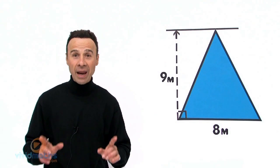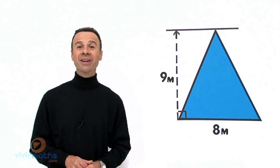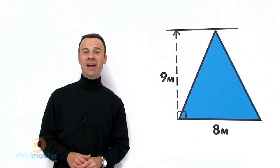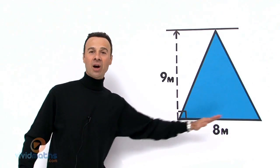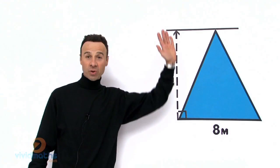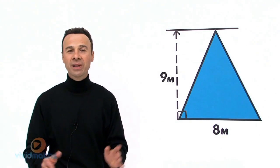When it comes to working out the area of a triangle, we only need two things, and that is the base across here times the vertical or perpendicular height. That's all we need.